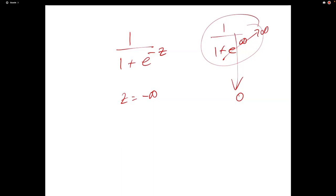If individual weights are so large that it causes numerical issues, you could try normalizing the weights. There's an extension to standard stochastic gradient descent where after every update step there's a normalization, so the weight vector never blows up. This was part of a paper called Pegasos, around 2007 or 2008 — worth checking out if you're interested, though the math may be a bit technical.